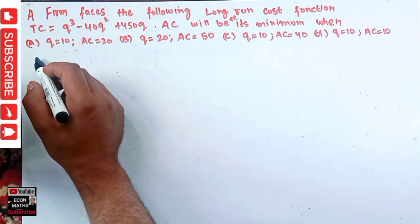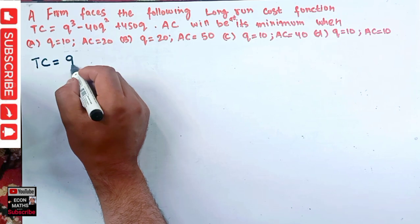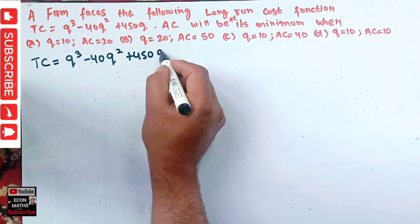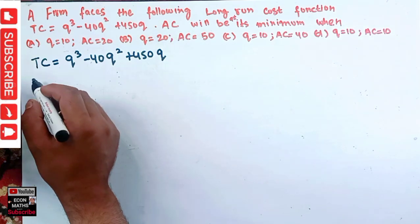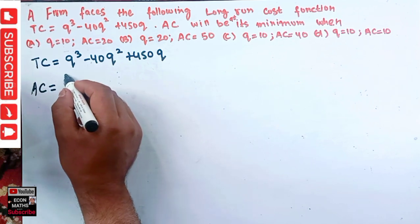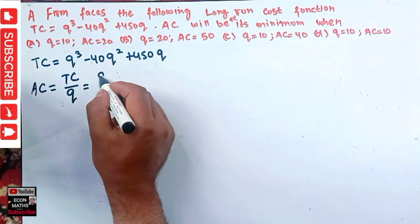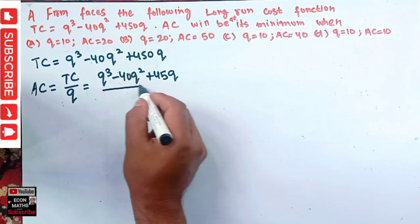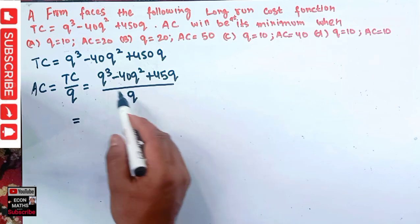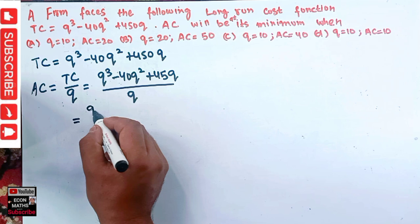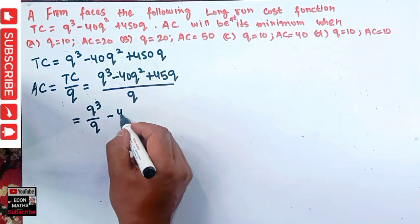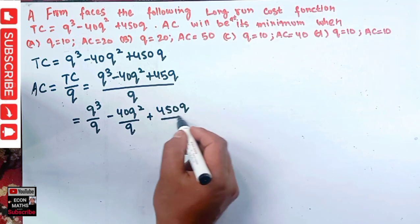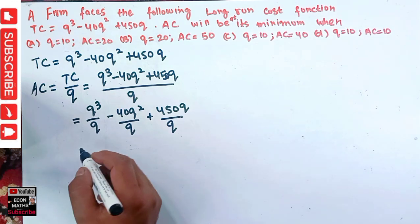We have the long-run total cost function: TC equals Q cubed minus 40Q squared plus 450Q. The question asks about average cost. Average cost is simply total cost divided by output, so we take Q cubed minus 40Q squared plus 450Q and divide by Q. We can write this as Q cubed over Q, minus 40Q squared over Q, plus 450Q over Q.